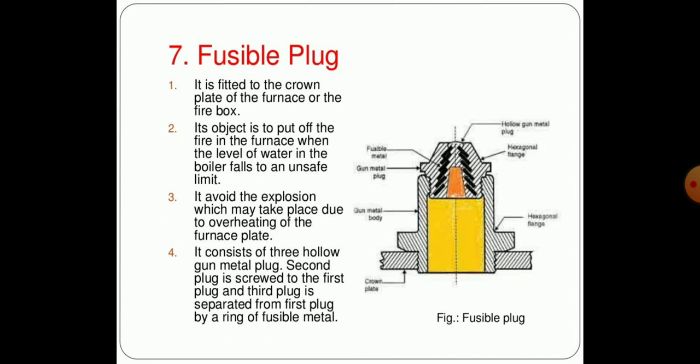Another important mounting of the boiler is the fusible plug. It is fitted to the crown plate of the furnace of the firebox, and its main object is to put off the fire in the furnace when the level of water in the boiler falls below the unsafe limit. It avoids the explosion which may take place due to overheating of the furnace plate. It consists of three hollow gun metal plugs: second plug screwed to the first plug, and third plug which is separated from the first plug by a ring of fusible metal.